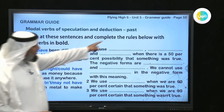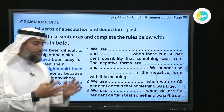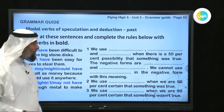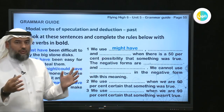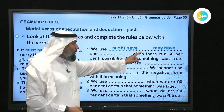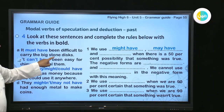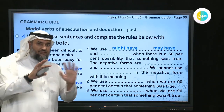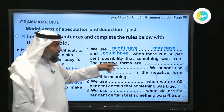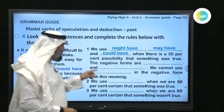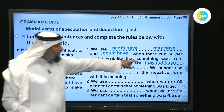Today we're going to take modal verbs in the past — something that happened in the past where you don't know exactly what's going on, but you want to speculate or deduce. It works the same way: if you're 50% sure, you say 'might have' or 'may have.' For example: 'It must have been difficult to carry the big stone disc.' You use 'could have' when there's a 50% possibility that something was true.